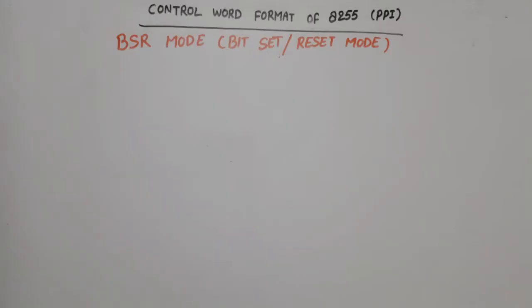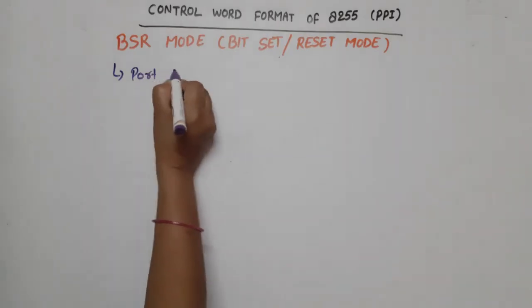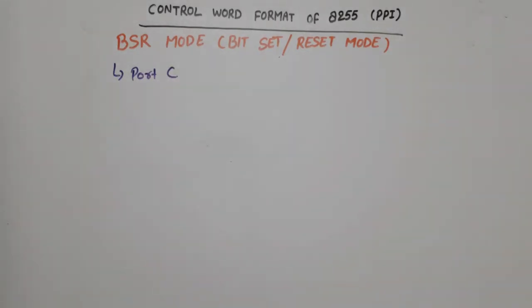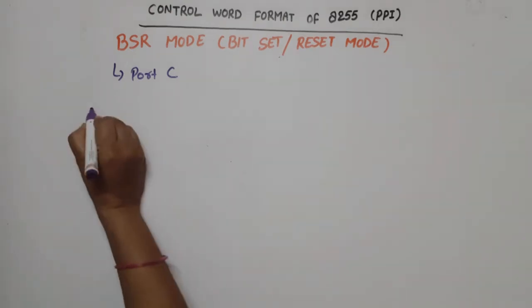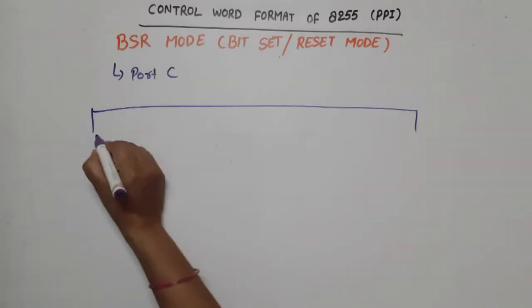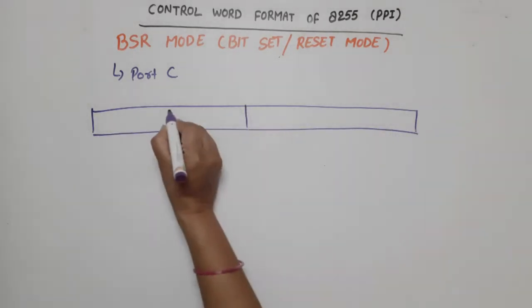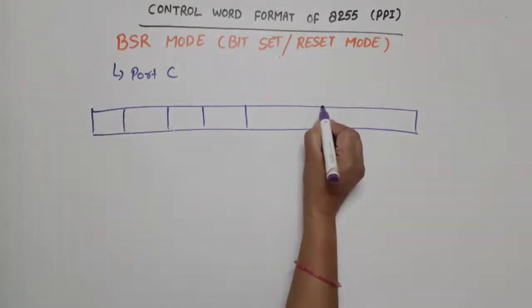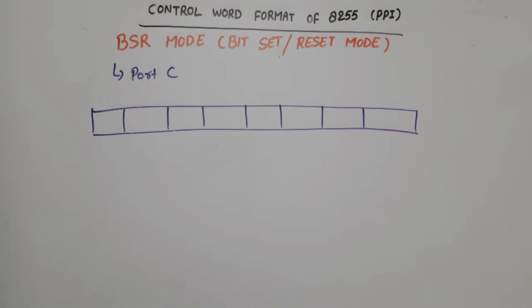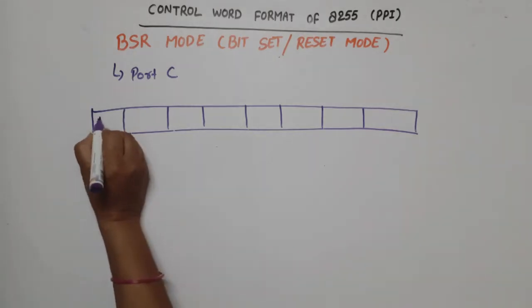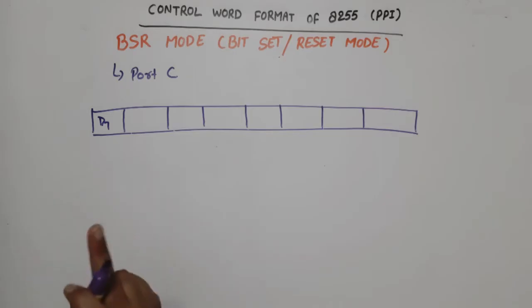In this video I am going to discuss the control word format of 8255 for BSR mode. BSR mode means Bit Set Reset mode, and BSR mode is only concerned with port C — it can set or reset the 8 bits of port C by using the appropriate control word. The control register is where we feed values to decide which bit to set or reset.